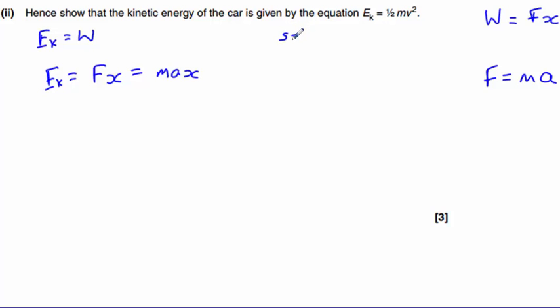For SUVAT: S is displacement, which we're calling x. U is initial velocity, which is zero since the car starts from rest. V is final velocity, which we want. A is acceleration, and we don't need T.